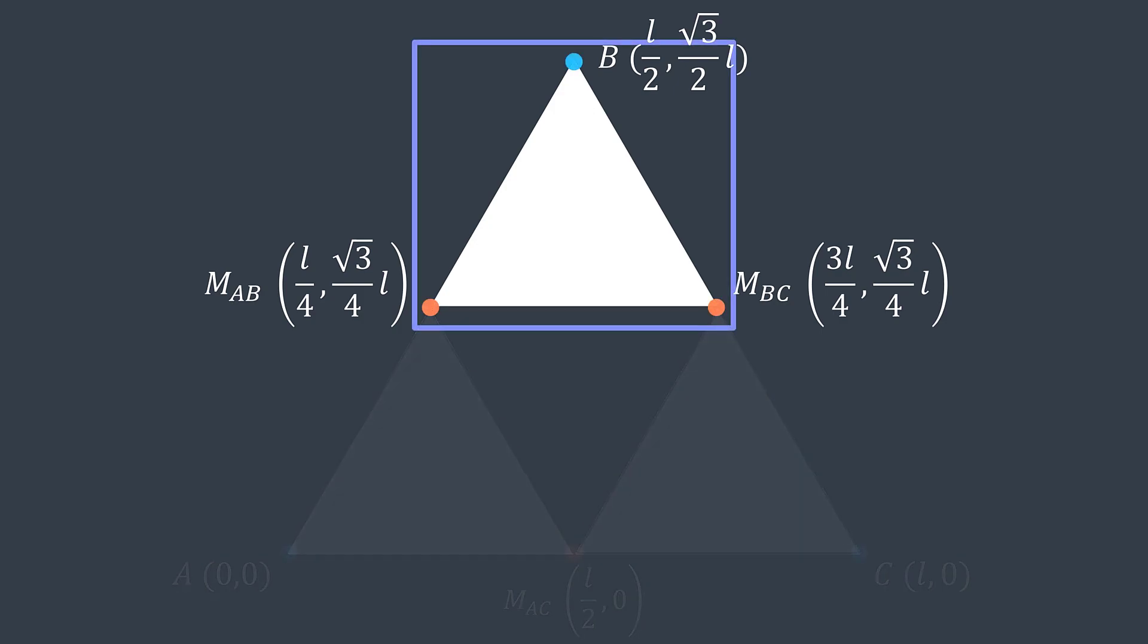For example, for the top sub triangle, we consider midpoint AB as it's A, midpoint BC as it's C, B as it's B, and we start.